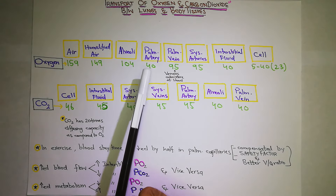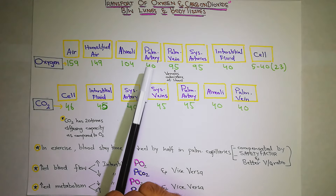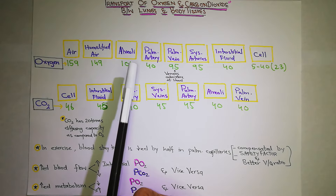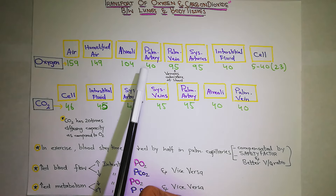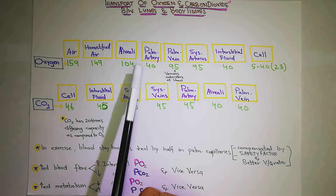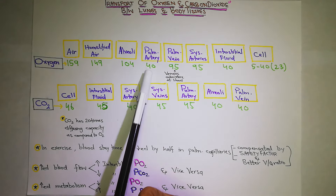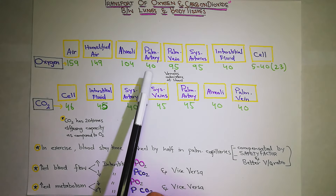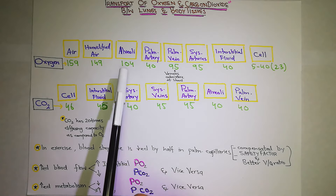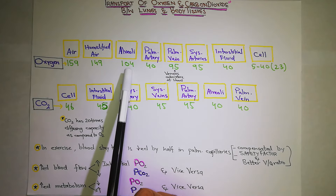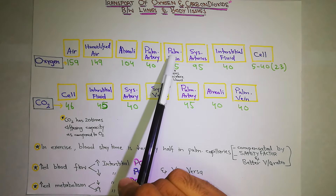Exchange اس طرح ہوتا ہے کہ جتنا time pulmonary arterial blood جو کہ pulmonary capillaries کے اندر ہے، وہ alveoli سے exchange کرتا ہے، اس کے صرف one third time میں ہی یہ 104 کا level pulmonary capillaries کے blood میں بن جاتا ہے۔ تو یہ 40 کا blood جو pulmonary artery سے آیا، alveoli نے اس blood کو oxygenate کر دیا اور اس blood کا partial pressure بھی 104 ہو گیا۔ اب یہ 104 والا blood pulmonary vein میں جاتا ہے تو یہ 95 ہو جاتا ہے۔